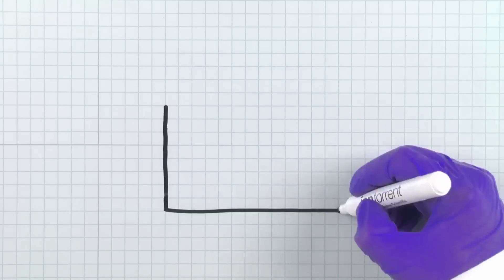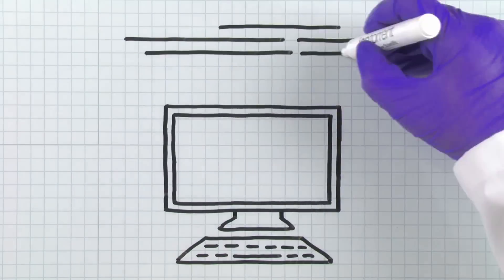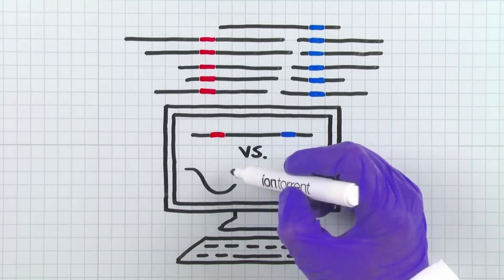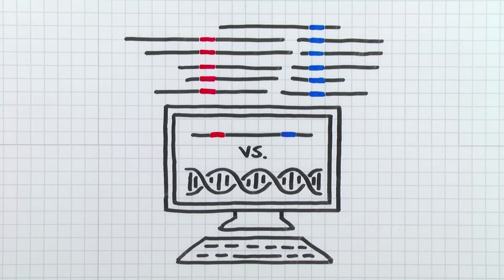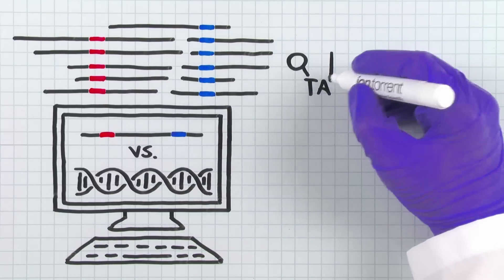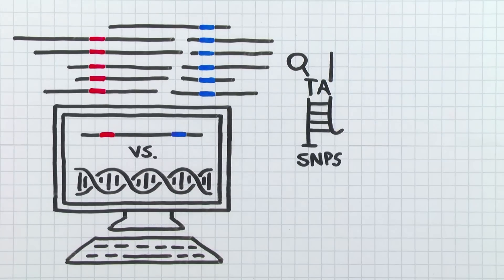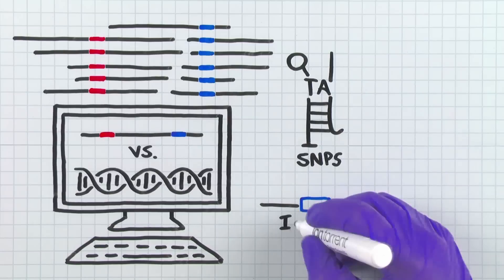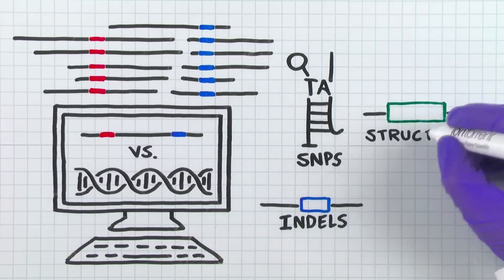So now you have a BAM file with aligned reads — what's next? Let's use the example of variant detection and dive deeper into how to find that needle in a haystack. With the help of our bioinformatics tools, we will determine if the sequence information contains a variant when compared to the reference genome. Variants can be single nucleotide polymorphisms, or SNPs, nucleotide insertions or deletions, also known as indels, as well as structural variants.